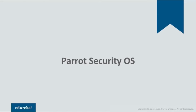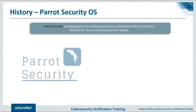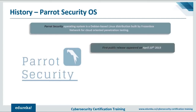Parrot OS is the second most popular Linux distro for ethical hacking after Kali Linux. It is a comprehensive, portable security lab that you can use for cloud penetration testing, computer forensics, reverse engineering, hacking, cryptography, and many other security purposes. The first release of Parrot OS appeared on April 10, 2013. Originally developed as part of Frozen Box, it now includes a community of open source developers, professional security experts, advocates of digital rights, and Linux enthusiasts from all over the world.